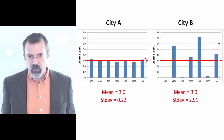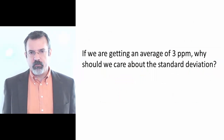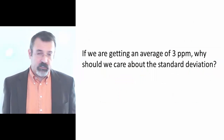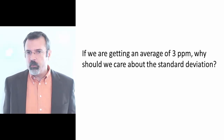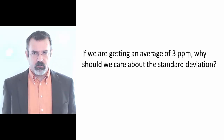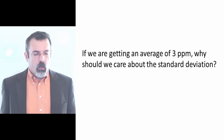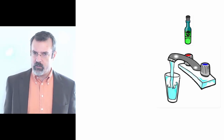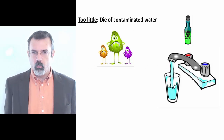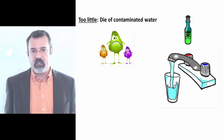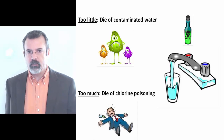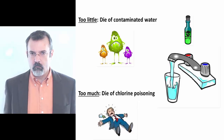This raises the question: if we're getting an average of three parts per million, and that's the average we want, why do we care about the standard deviation? The reason we care is because chlorine is a poison. If we put too little in the water, the people die of contaminated water. But if we put too much, the people die of chlorine poisoning.